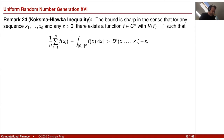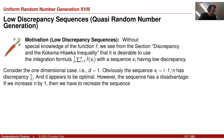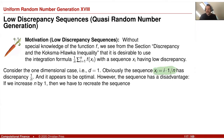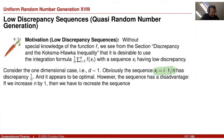Today's topic is low discrepancy sequences. One example in one dimension is the equidistributed sequence, where x_i equals i divided by n. This sequence has a discrepancy of 1/n, which is optimal without further knowledge of the function f.